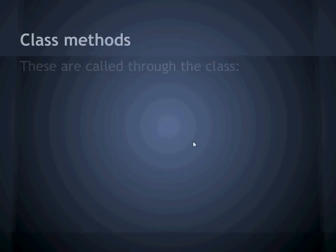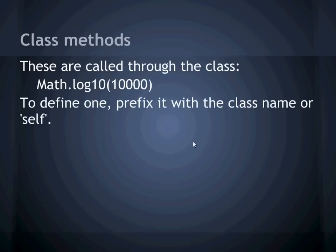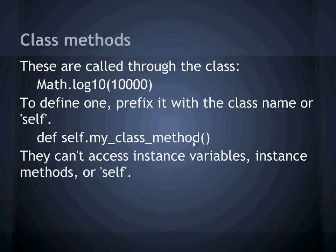Class methods are less common than instance methods. You call them through the class. You don't need an instance. An example of a class where you can find some of these is math. Here we're calling the log10 method. Class methods are defined by prefixing the name with self and a dot, like this. Because you don't use an instance to call these methods, they can't access instance variables, or call instance methods, and they can't refer to self. They can only operate on class variables, and on whatever arguments are supplied to them when they're called.